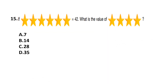Question 15: If 6 stars equal 42, what is the value of 4 stars? First find the value of 1 star: 42 divided by 6. Six sevens are 42, so 1 star equals 7. Therefore 4 stars equal 7 multiplied by 4 = 28. Answer: option C, 28.